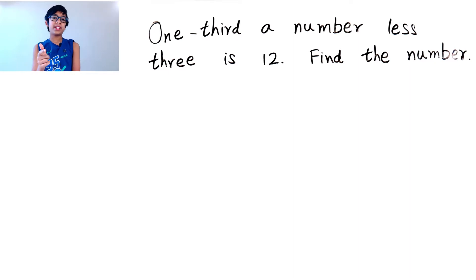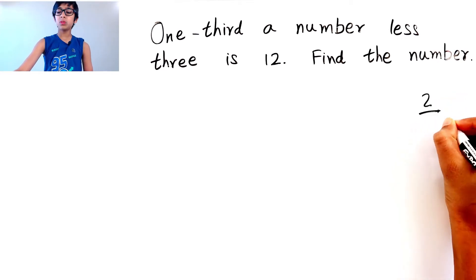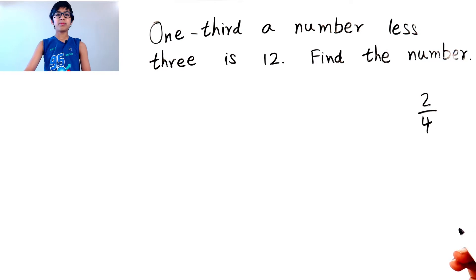Let's find the number. Okay, so let's see. First, one-third. So one-third is like, let's take two-fourths. So I'm gonna write two-fourths. That's how you write it.